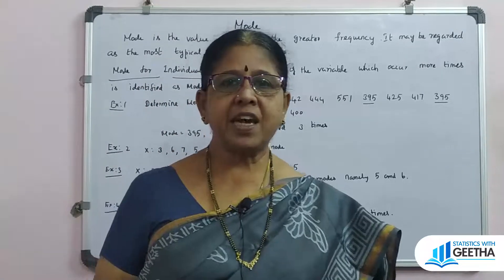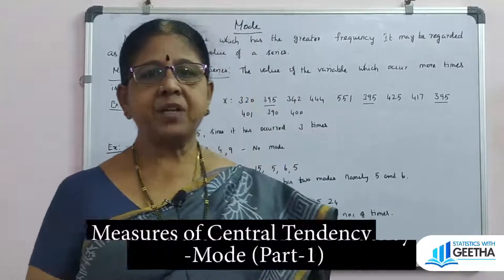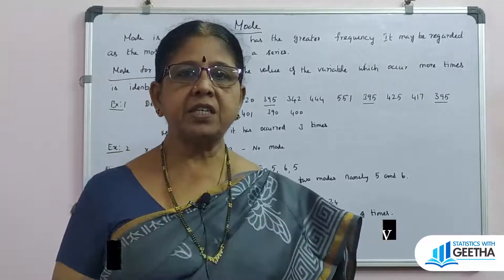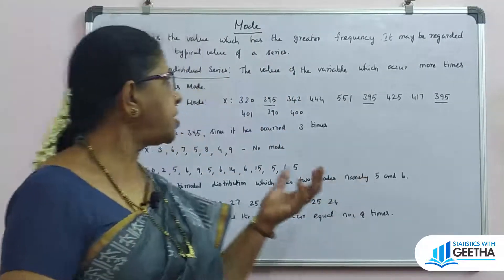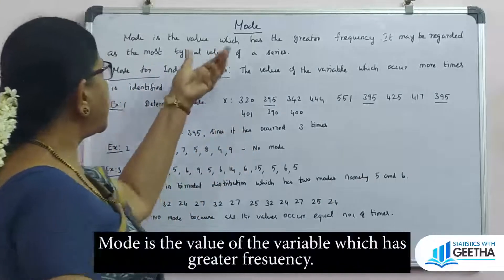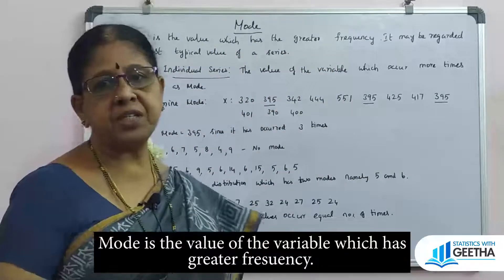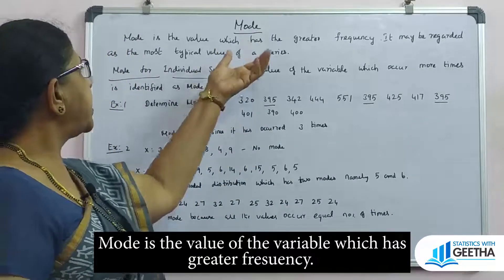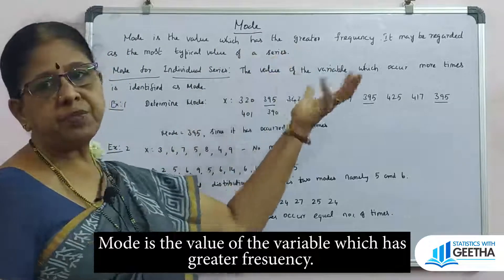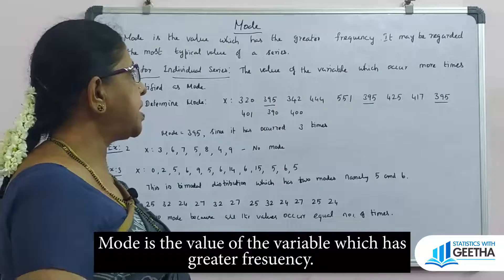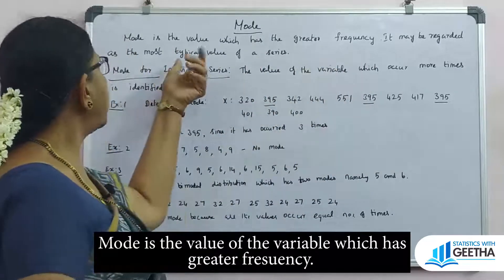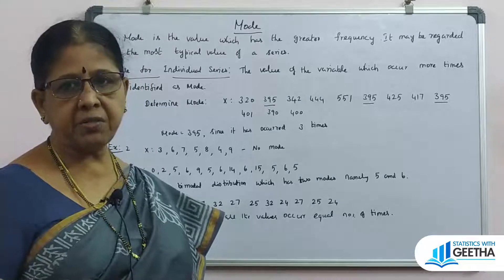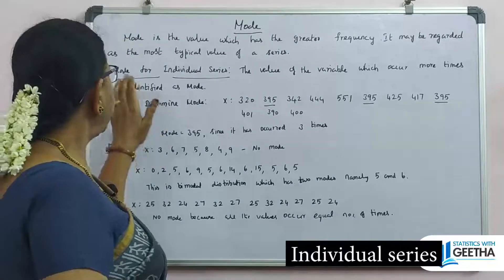Hello, welcome to my channel, Statistics with Geetha. Now we are going to see the third measure of central tendency, that is mode. Mode is nothing but the value which has the greater frequency. It is often used in our daily life and may be regarded as the most typical value of a series — that is, it is representative of a series.